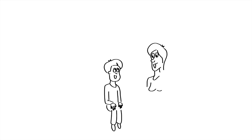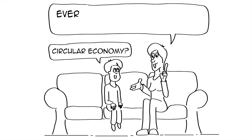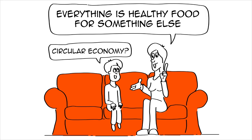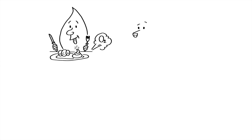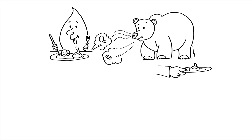When my son was three years old and asking his mommy what was this circular economy thing she was working on, here is what she told him: 'It is when everything is healthy food for something else.' So simple and sweet. In other words, it means running the economy like nature runs its own business. Plants use carbon dioxide and nutrients to grow and produce oxygen. Animals use oxygen and create carbon dioxide and nutrients. Nothing is wasted. It is a closed-loop system.